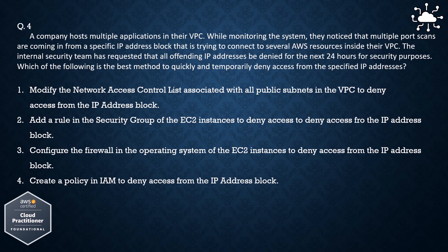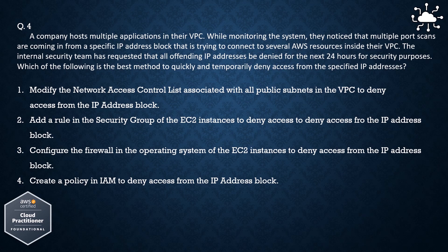Option 1: Modify the network access control list associated with all public subnets in the VPC to deny access from the IP address block. Option 2: Add a rule in the security group of the EC2 instances to deny access from the IP address block. Option 3: Configure the firewall in the operating system of the EC2 instances to deny access from the IP address block. Option 4: Create a policy in IAM to deny access from the IP address block. The correct answer is: modify the network access control list associated with all public subnets in the VPC to deny access from the IP address block.